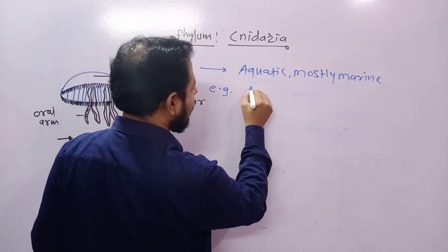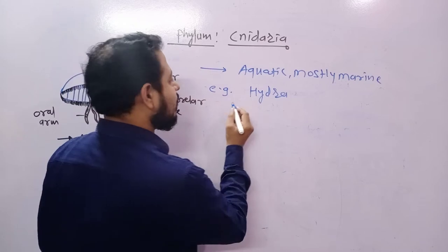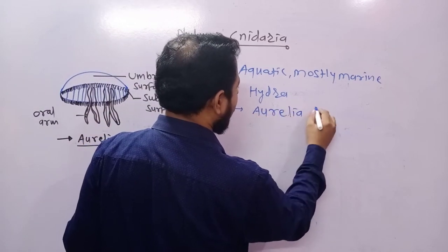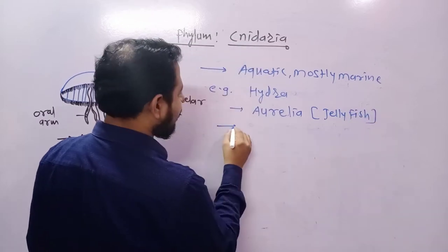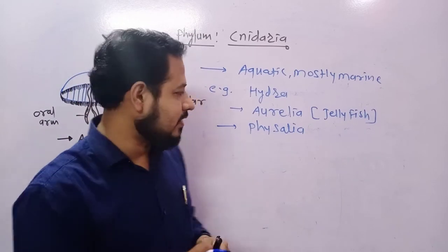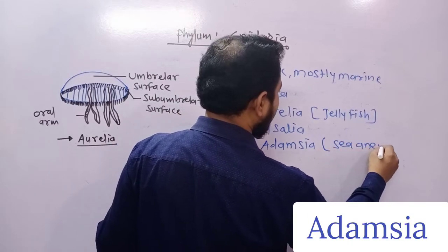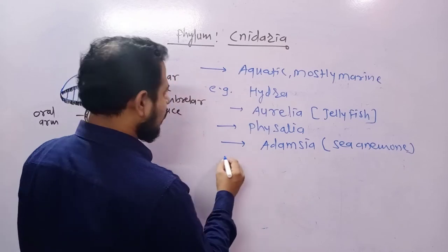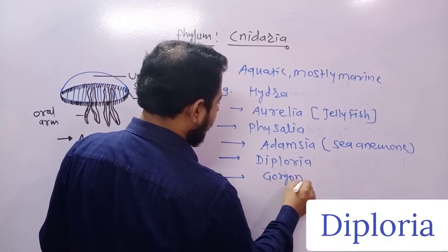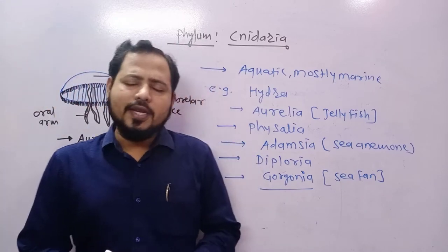Let's look at some examples for better understanding. The most common example is Hydra, which is a freshwater animal. Another important example is Aurelia, well known as jellyfish. Then there is Physalia, called Portuguese Man of War. Similarly, we have Adamsia, which is a sea anemone — it looks like a flower, hence called a sea animal. We also have Diploria, commonly called sea fan.